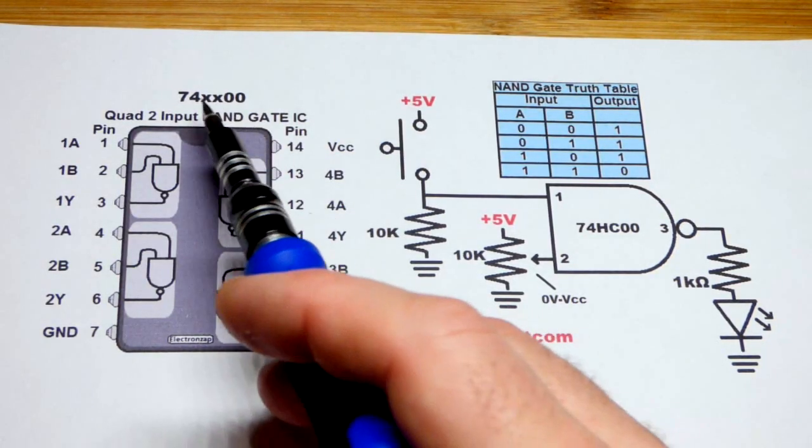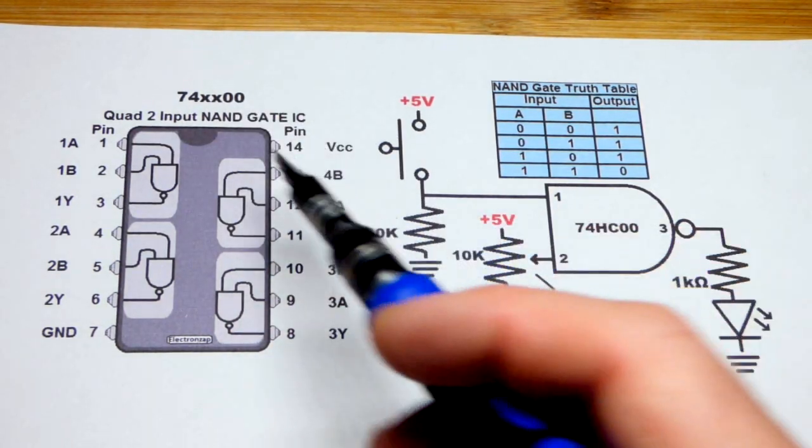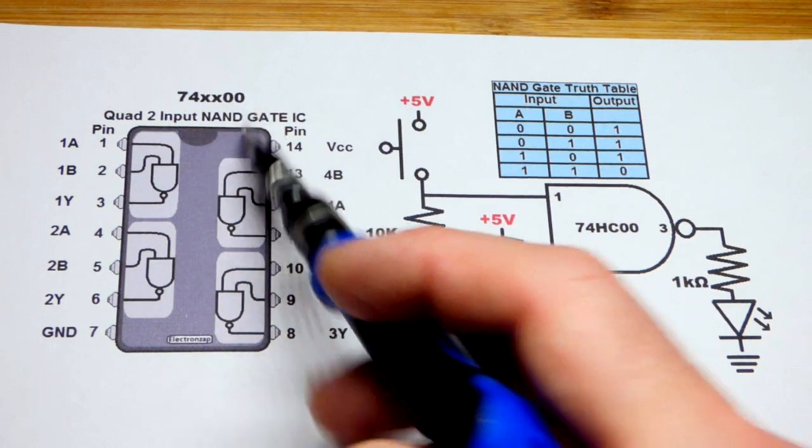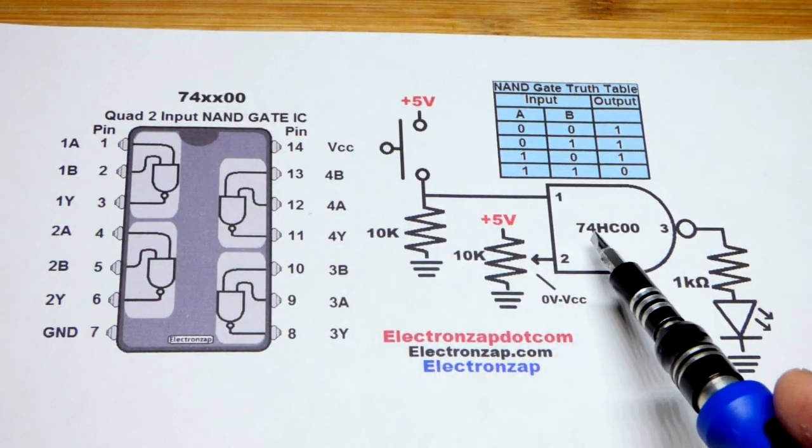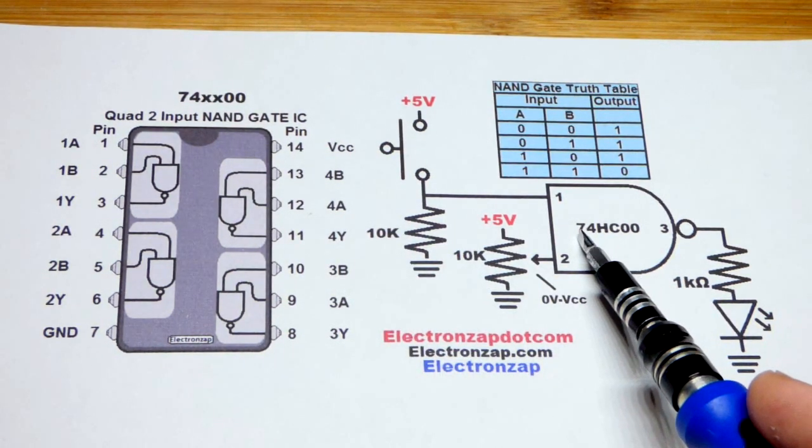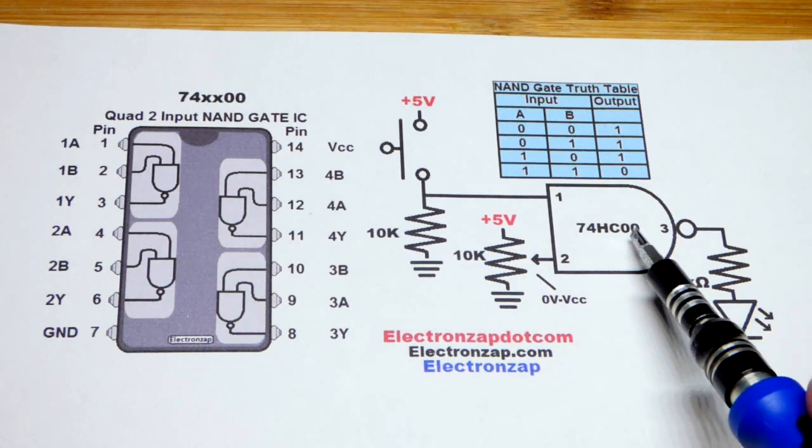So now in this video, we're going to look at the 7400 integrated circuit. It's part of the 7400 series of integrated circuits, and the particular one we're going to use is the 74HC00.